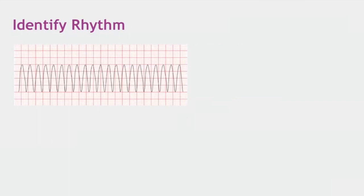The final ECG shows ventricular tachycardia. The QRS complexes are wide, there are no P waves, and a sine-wave-like pattern is seen — this is a tachycardia arising from the ventricle itself. For wide complex tachycardia, ventricular tachycardia is usually the only differential. For narrow complex tachycardia, you differentiate between sinus tachycardia and PSVT based on the ECG pattern.